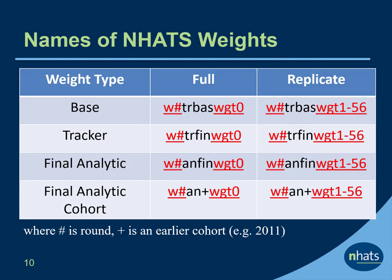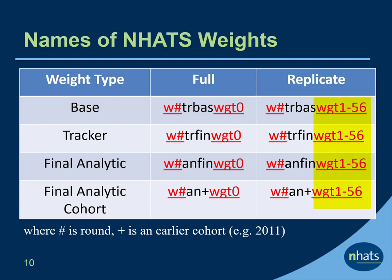All weight variables in NHATS start with a W for weight, followed by a round number designated here on the screen with a pound sign. All full sample weights end in WGT0, and all replicate weights end in WGT followed by the values 1 to 56. The type of weight is highlighted in the middle. For instance, TRBAS is base weight on the tracker file, TRFIN is the tracker weight on the tracker file, ANFIN is the final analytic weight, and ANFIN+ is the final analytic cohort weight, where the plus indicates an earlier cohort, in this case 2011.